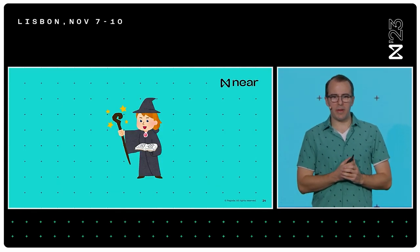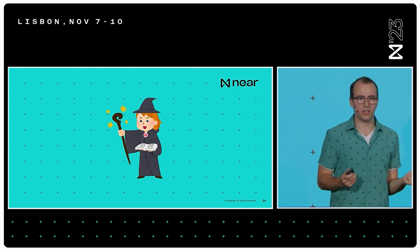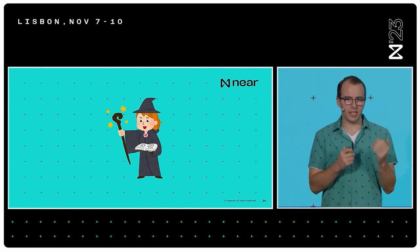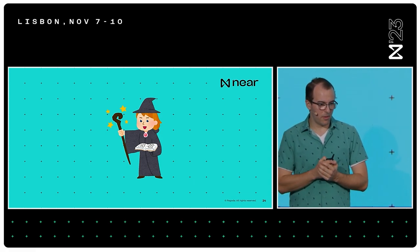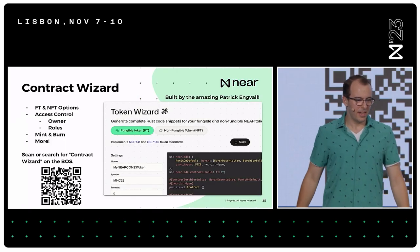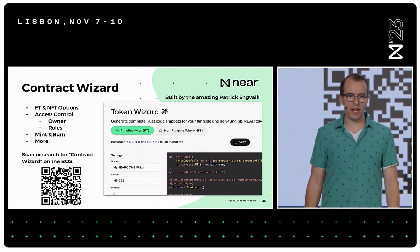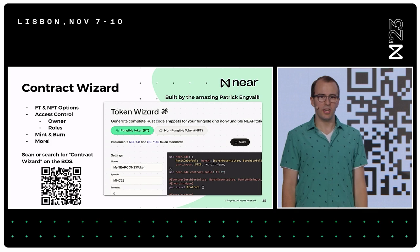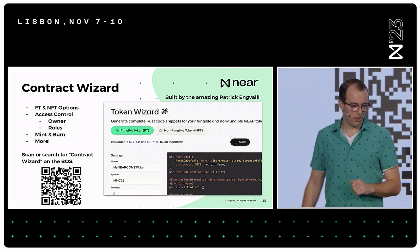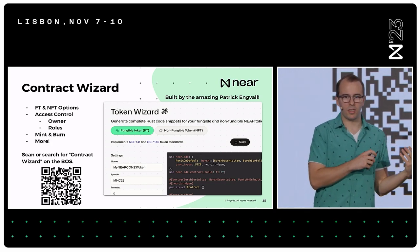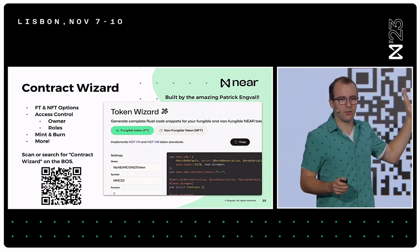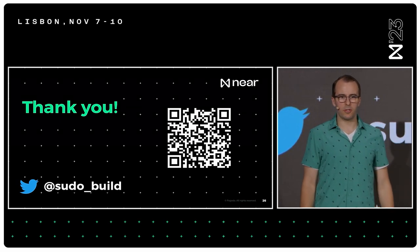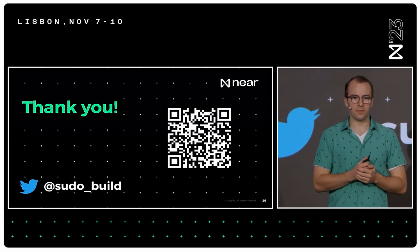My team has also designed another tool available on the NEAR website called the Contract Wizard. You can scan the QR code or go to near.org and search for Contract Wizard. It pulls up a user interface where you can generate code to get started writing a smart contract that implements all these different standards and takes advantage of the power of the Rust programming language. This smart contract library was designed with all these security considerations in mind. Scan the QR code and start writing your smart contracts on NEAR in Rust. Thank you very much.